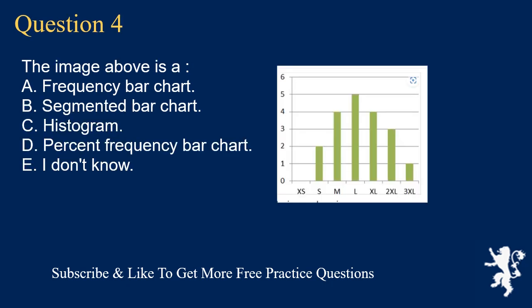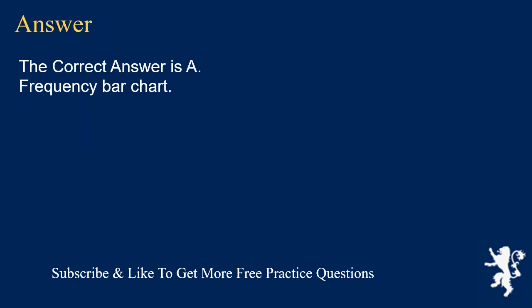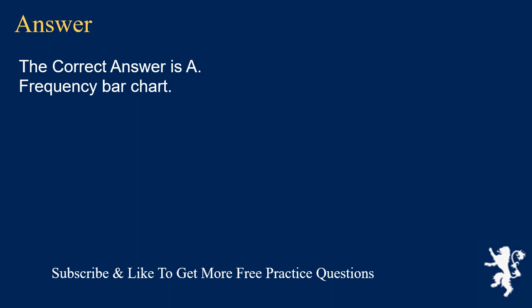Question 4: The image above is A. a frequency bar chart, B. segmented bar chart, C. histogram, D. percent frequency bar chart, E. I don't know. The correct answer is A, frequency bar chart.